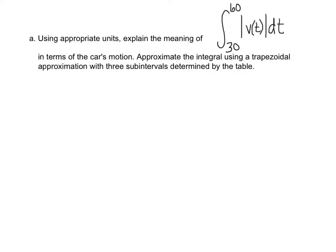Part A. Using appropriate units, explain the meaning of the following integral in terms of the car's motion, and approximate the integral using a trapezoidal approximation with three sub-intervals determined by the table. This integral represents the distance in feet that the car travels from t equals 30 seconds to t equals 60 seconds.